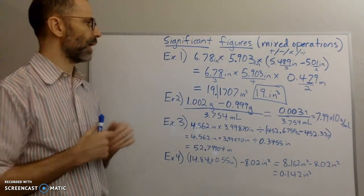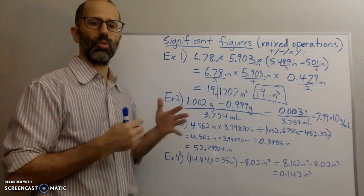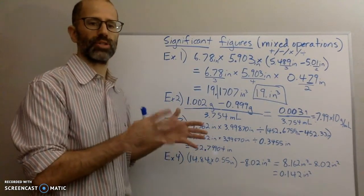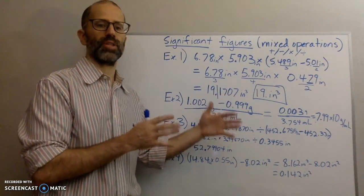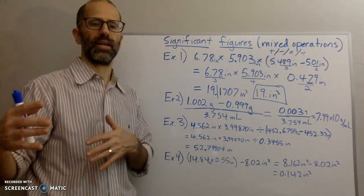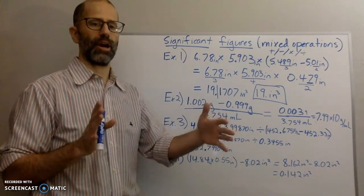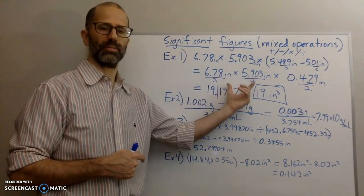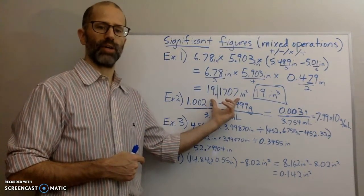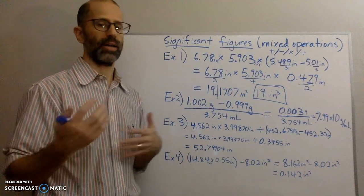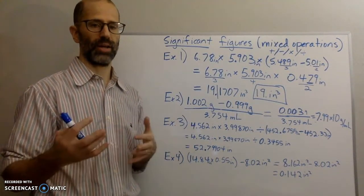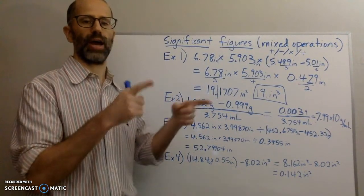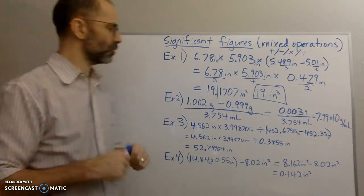An important thing to keep in mind: whenever you're adding and subtracting, the number of significant figures can change in your answer. You can start with measurements with a certain number of significant figures, do all your calculations, and get a number from your calculator — but if you had to add and subtract along the way, that can change the number of significant figures from what you began with. So you can't just go back to all your original numbers and look at which one had the least number of sig figs. You've got to watch out for that.